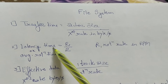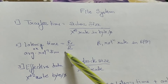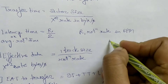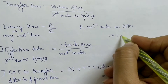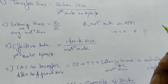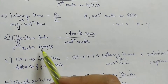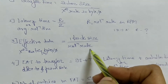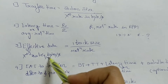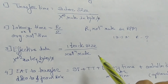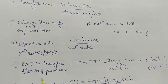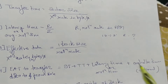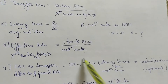The latency time or average rotation time equals r divided by 2, where r is the rotation rate in RPM. The effective data transfer rate in bytes per second equals one track size divided by rotation rate. The effective access time to transfer data to or from the disk equals seek time plus transfer time plus rotation latency time, plus an optional controller time.